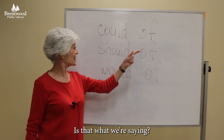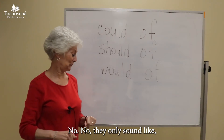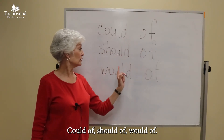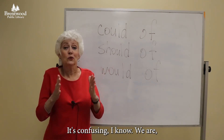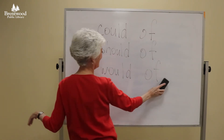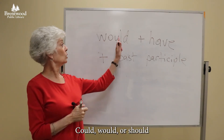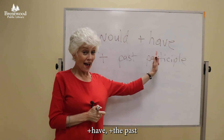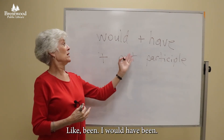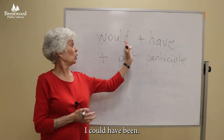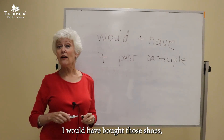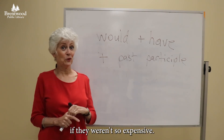But are they? Is that what we're saying? No. They only sound like could of, should of, would of. It's confusing, I know. But we are really saying — and don't ever write this or say this — we are really saying could, would, or should, plus have, plus the past participle of a verb. Like been: I would have been, I could have been, I should have woken. I would have bought those shoes if they weren't so expensive.